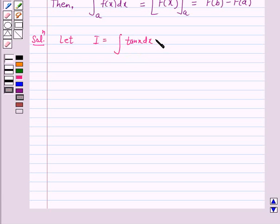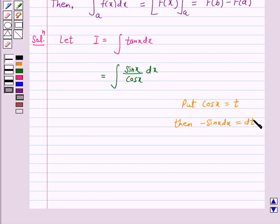Now, we can rewrite this as integral of sin x upon cos x dx. Now, here put cos x equal to t, then minus sin x dx equals dt, or sin x dx is equal to minus dt.